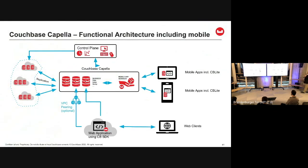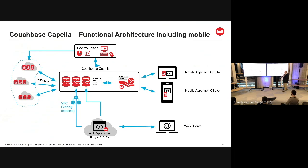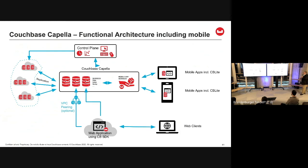The complete picture: the central component is the cluster. You have App Services for mobile end devices, and typical web service applications used by web clients. VPC peering is possible between the data plane VPC and the web application VPC. Replication to other clouds via XDCR, and the control plane keeps everything in an overview — administering and controlling all functions in one place.